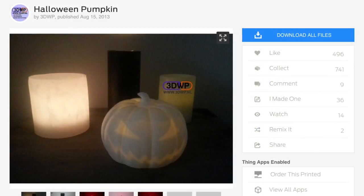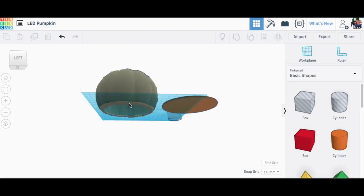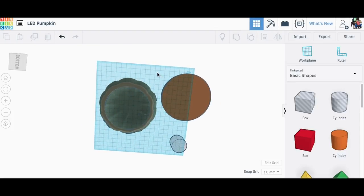I found this Halloween pumpkin on Thingiverse by user 3DWP and a face appears when you light it up. This pumpkin has a hole in the bottom so you can put it over the top of a candle or something.